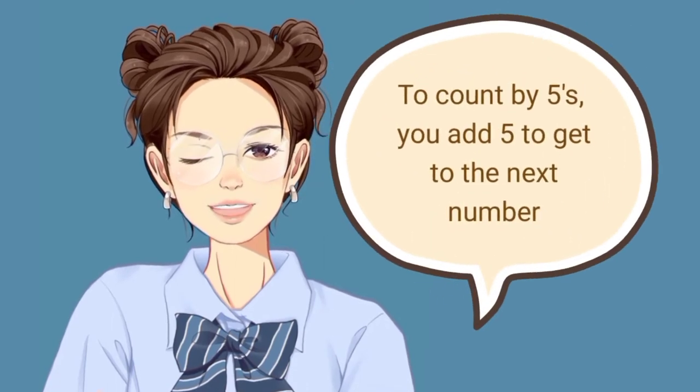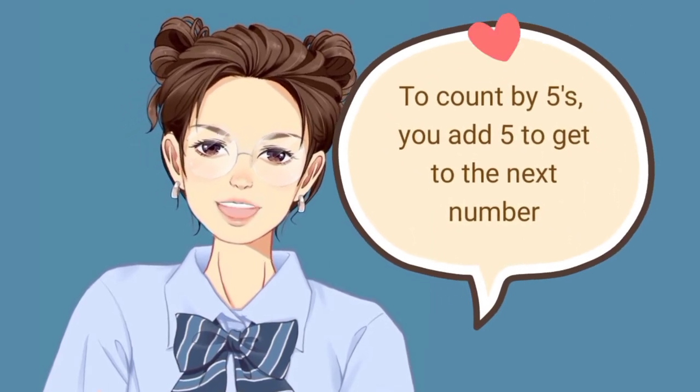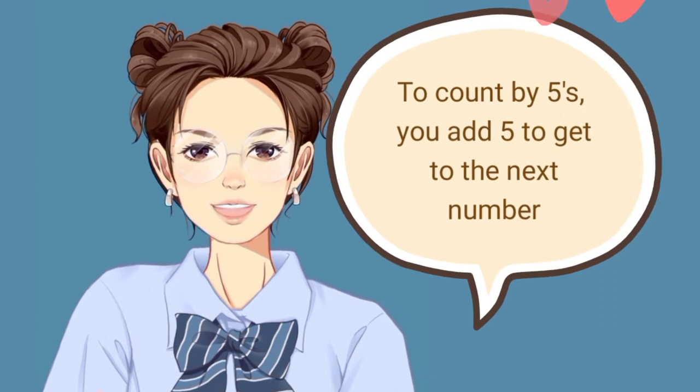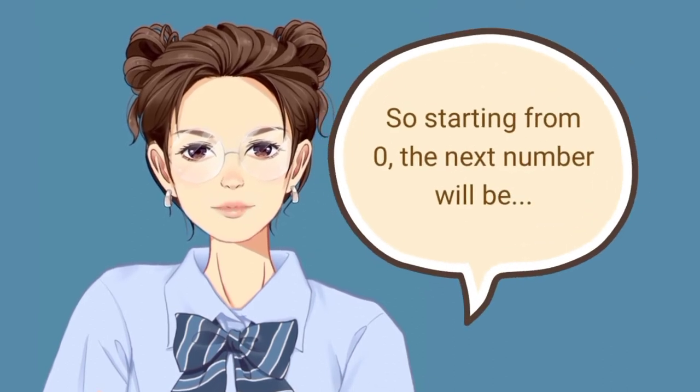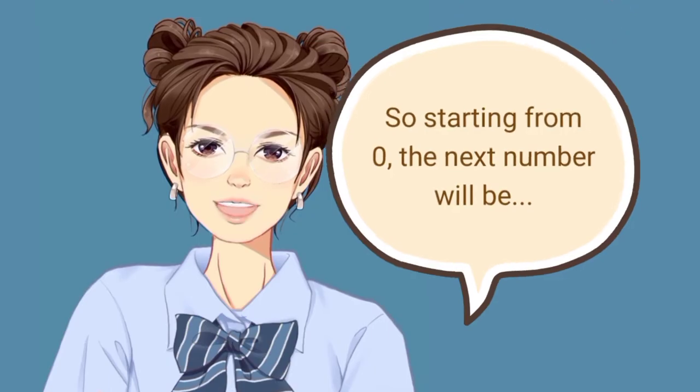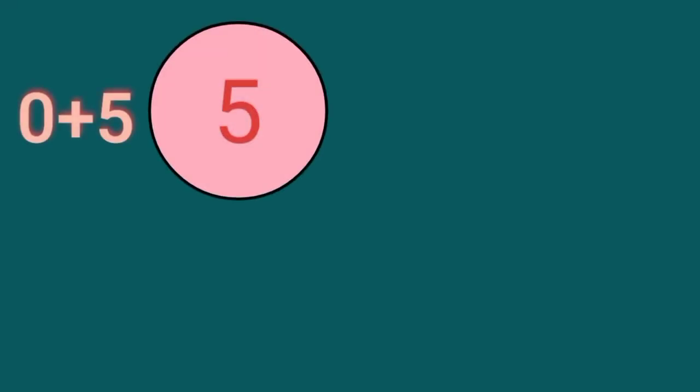To count by 5s, you add 5 to get to the next number. Starting from 0, the next number will be 0 plus 5 is 5.